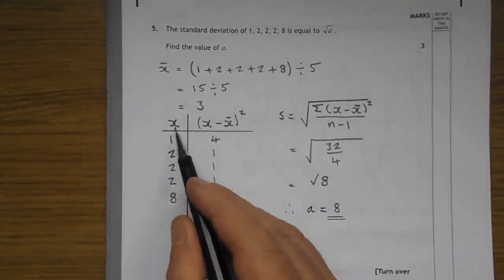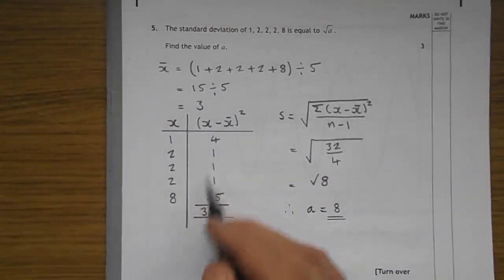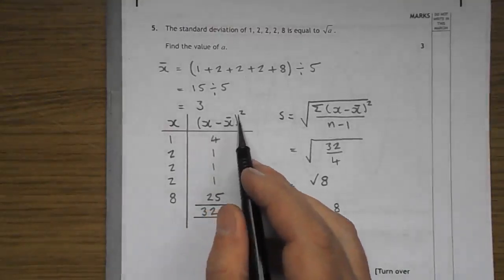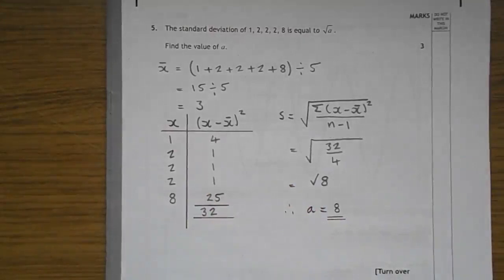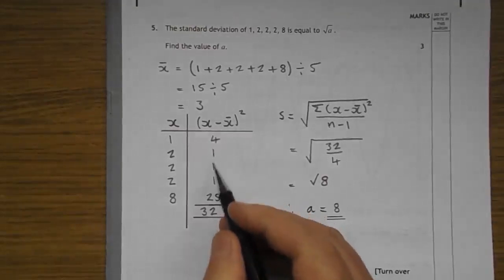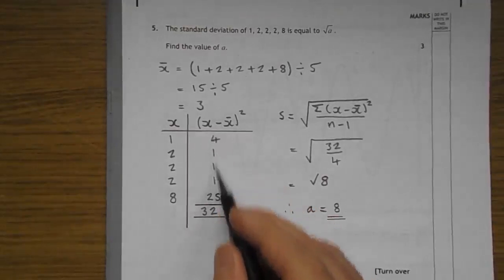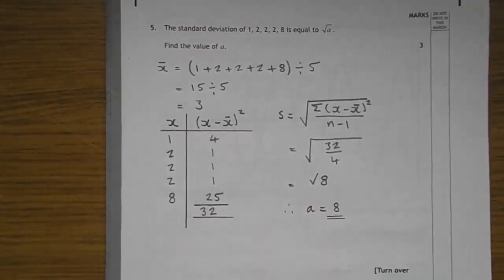And here we have the X numbers. These are the 1, 2, 2, 2, 8. And over here, each number, take away the mean squared. 1 take 3, minus 2, square it, you get 4. 2 take 3, minus 1, square it, you get 1. There we have it down there. 8 take 3 is 5. Square it, you get 25. Add these up, you get 32.